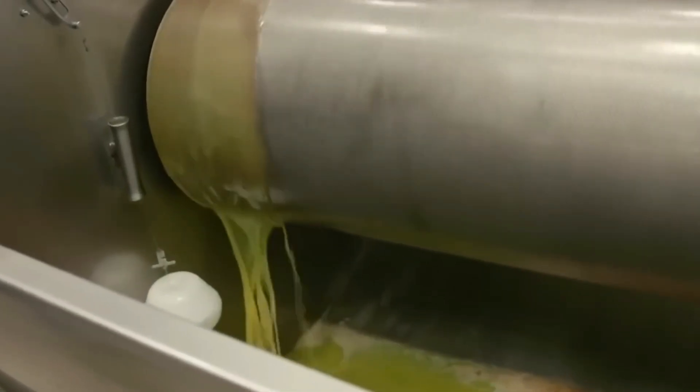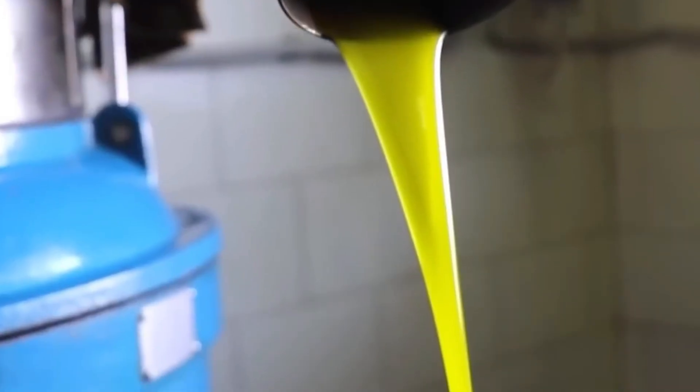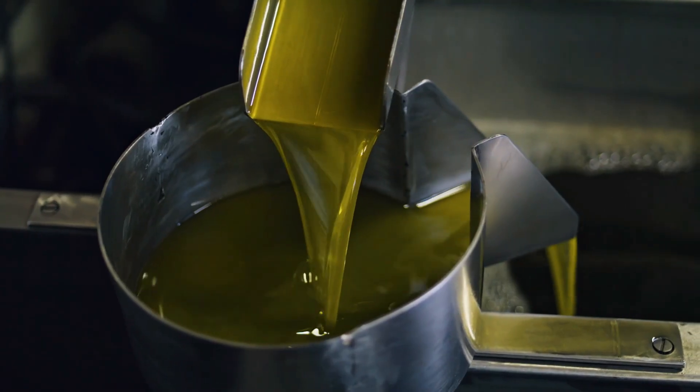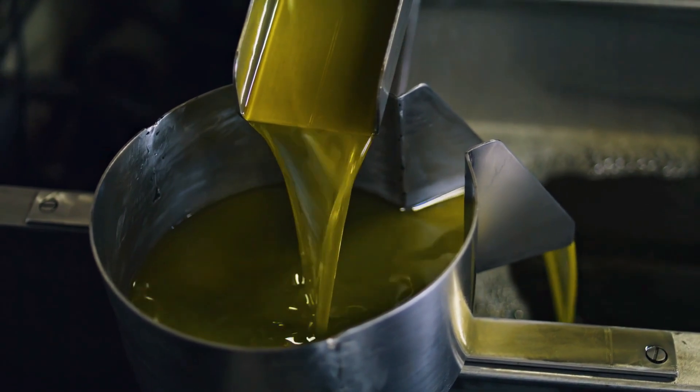Finally, the paste is ready to spin. Enter the centrifuge, the unsung hero of modern extraction. Spinning at incredible speeds, it separates oil from water and solids. Out pours a stream of golden liquid—pure olive oil. Smooth, aromatic, and ready for the next transformation.